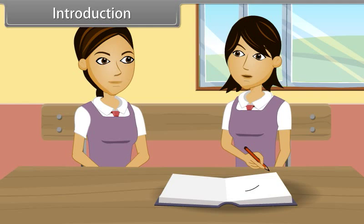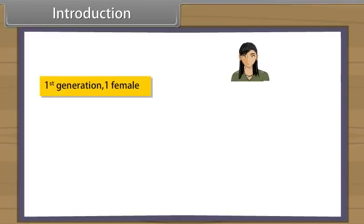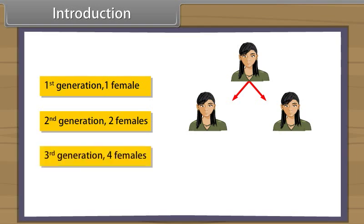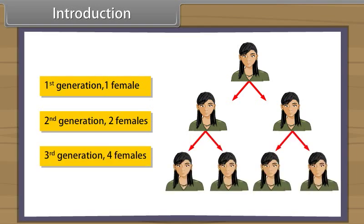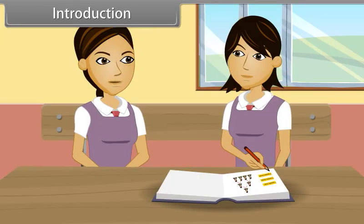Yes, it is possible, if the generation number is known. First generation: one female. Second generation: two females. Third generation: four females. Wow, that was so simple. Do you know what we call such progressions? Such a progression is a geometric progression. Come, I will tell you more about this.